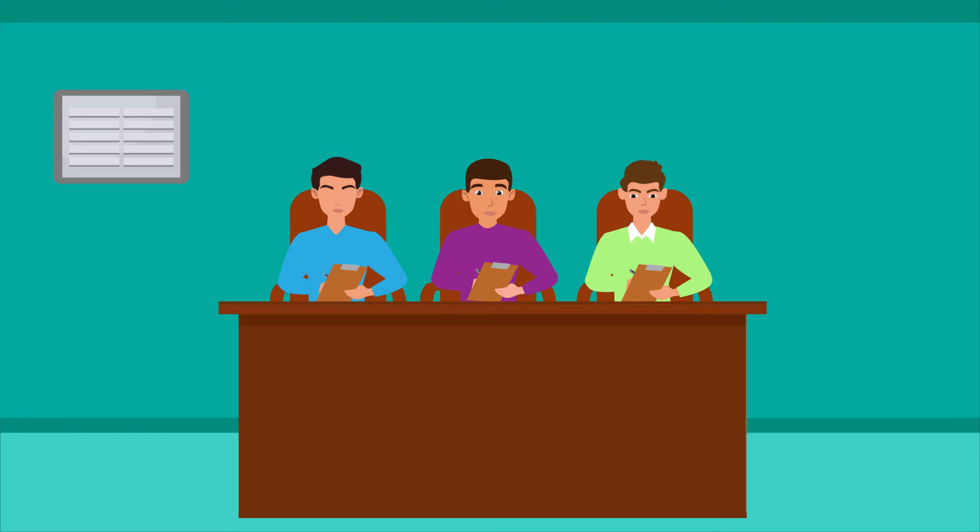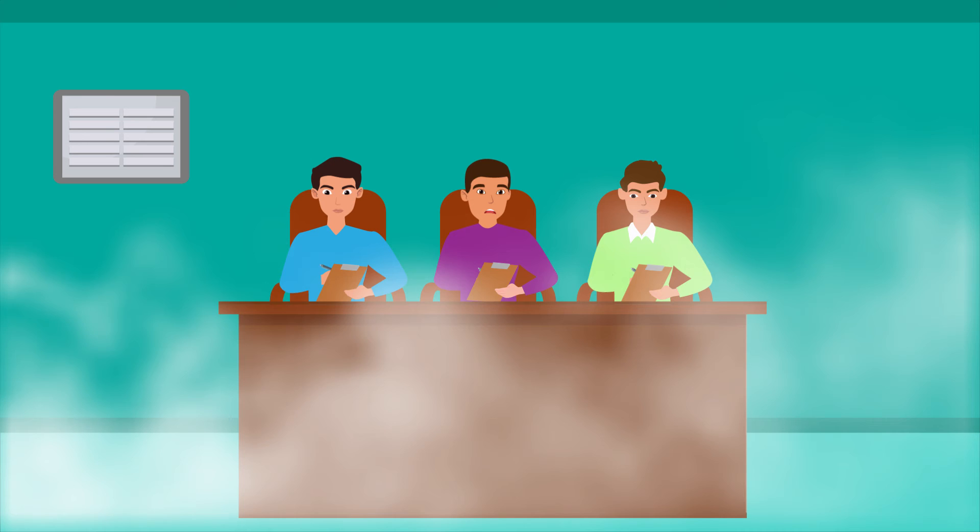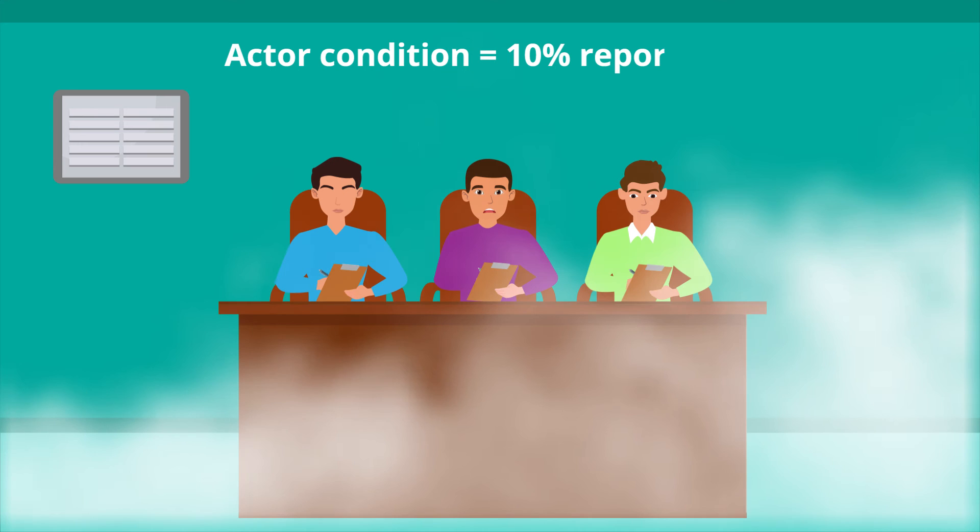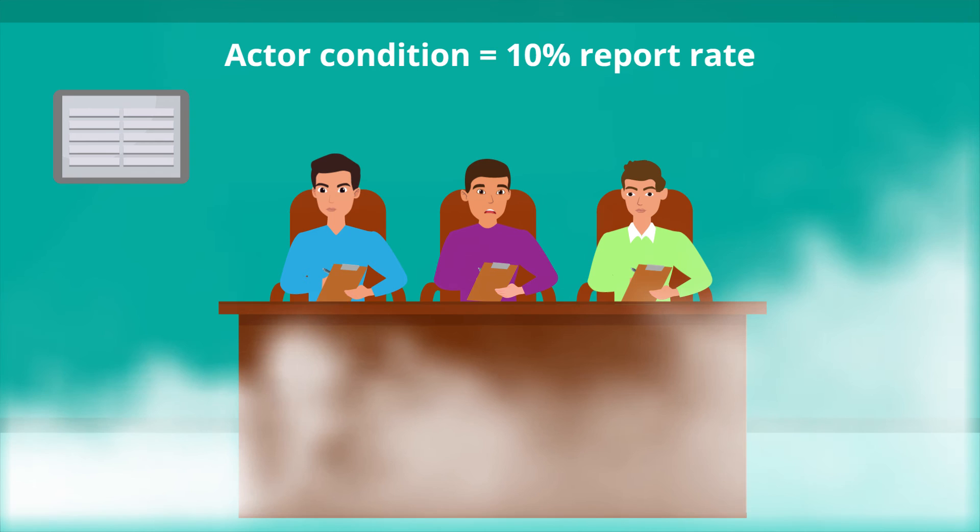The second and third experimental conditions yielded very different results. The second experimental condition involved one subject and two actors who behaved indifferently toward the smoke. When the subject noticed the smoke, the confederates simply shrugged and returned to their work, making very little conversation. Only 10% of the subjects in this condition reported the smoke.